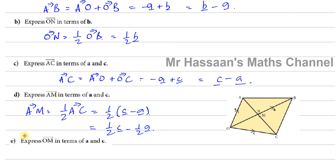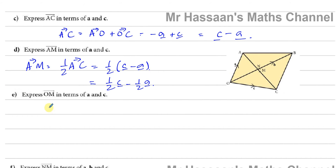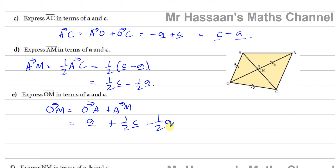Part E: express OM in terms of a and c. I know OA is vector a and I just found AM is ½c minus ½a. So OM equals OA plus AM, which is a plus ½c minus ½a. Collecting like terms: a minus ½a gives ½a, so OM equals ½a plus ½c.